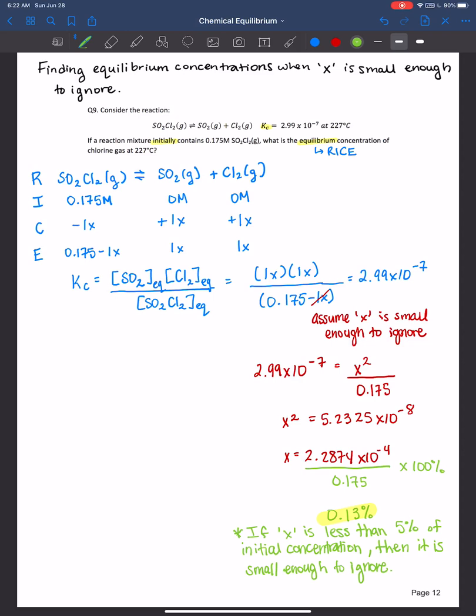All right. So now we have a value for x. Let me go ahead and highlight that. It's 2.2874 times 10 to the negative fourth. I love to keep my significant figures until the very end. The question's asking us, what is the equilibrium concentration of the chlorine gas?